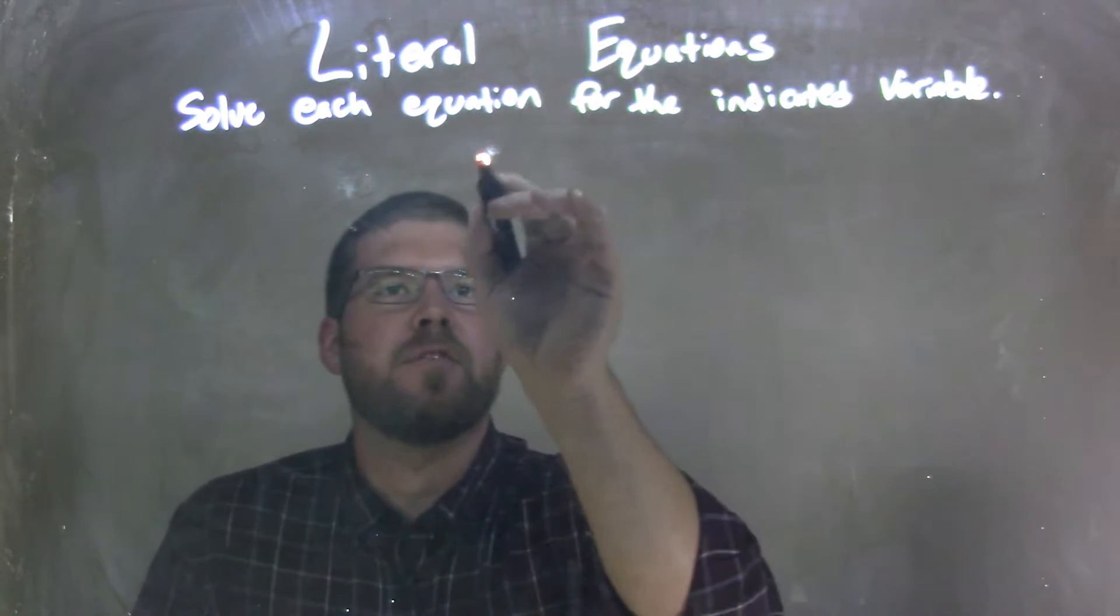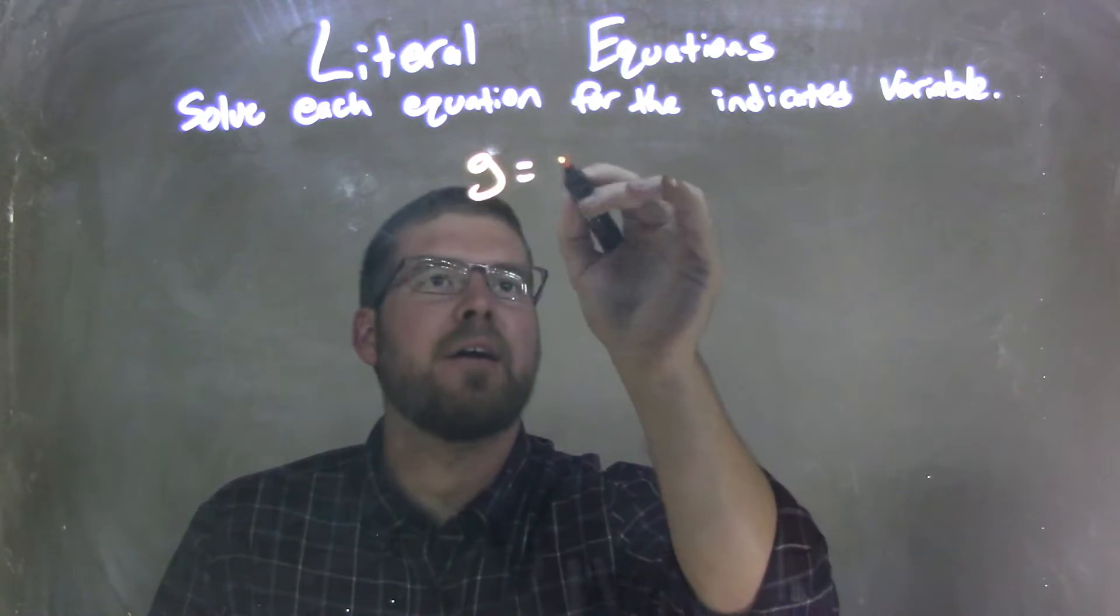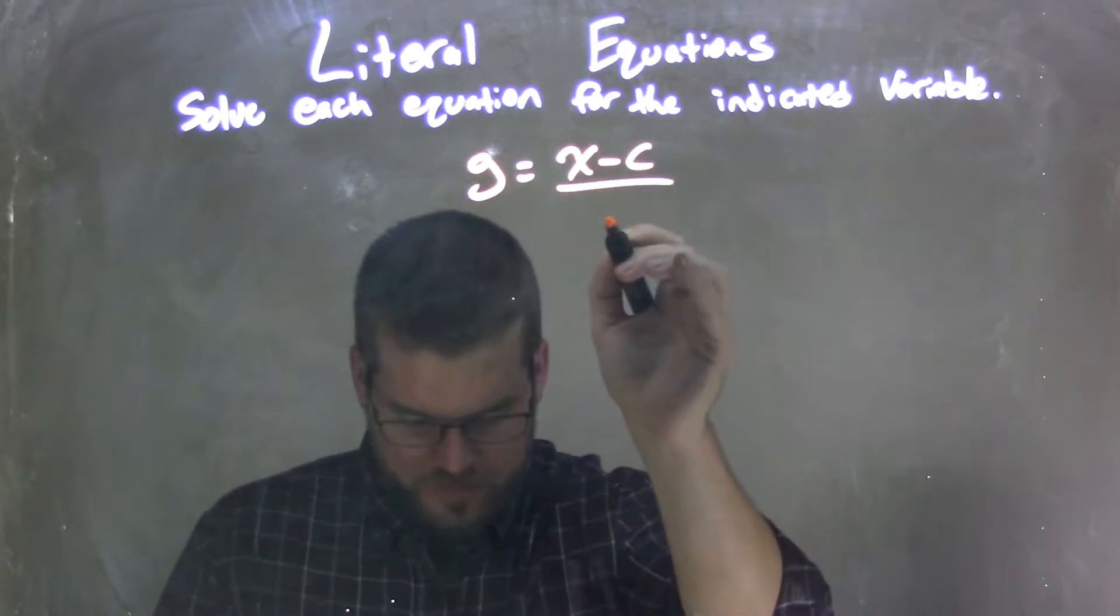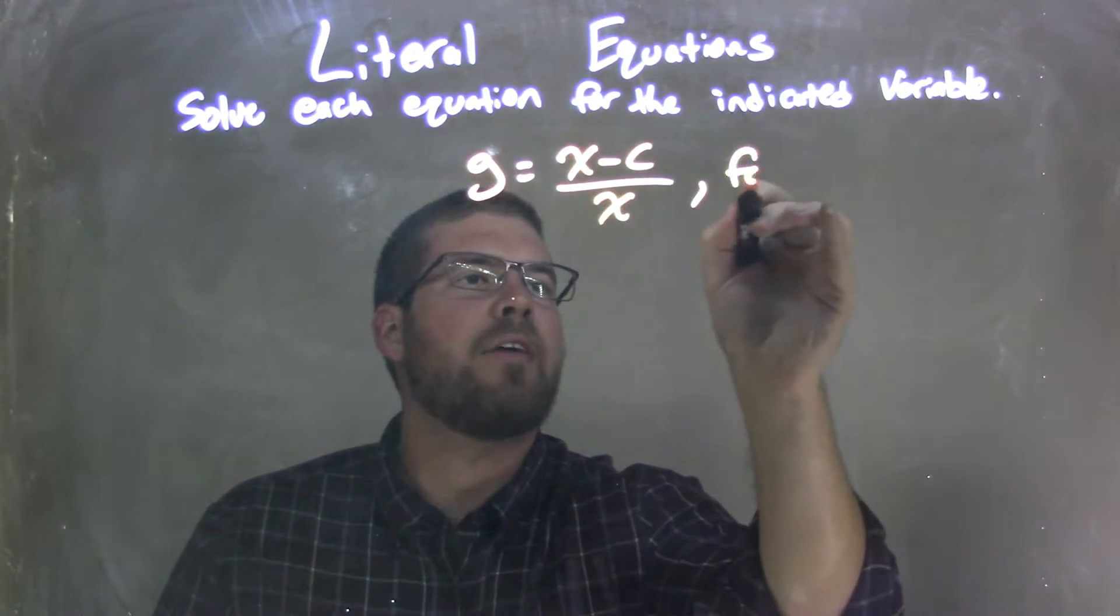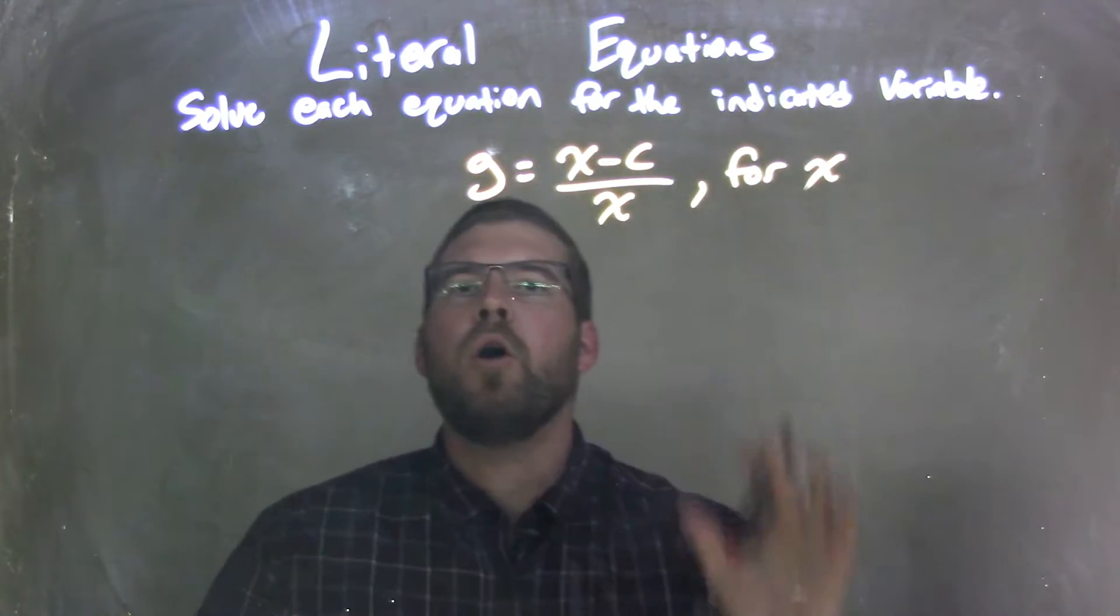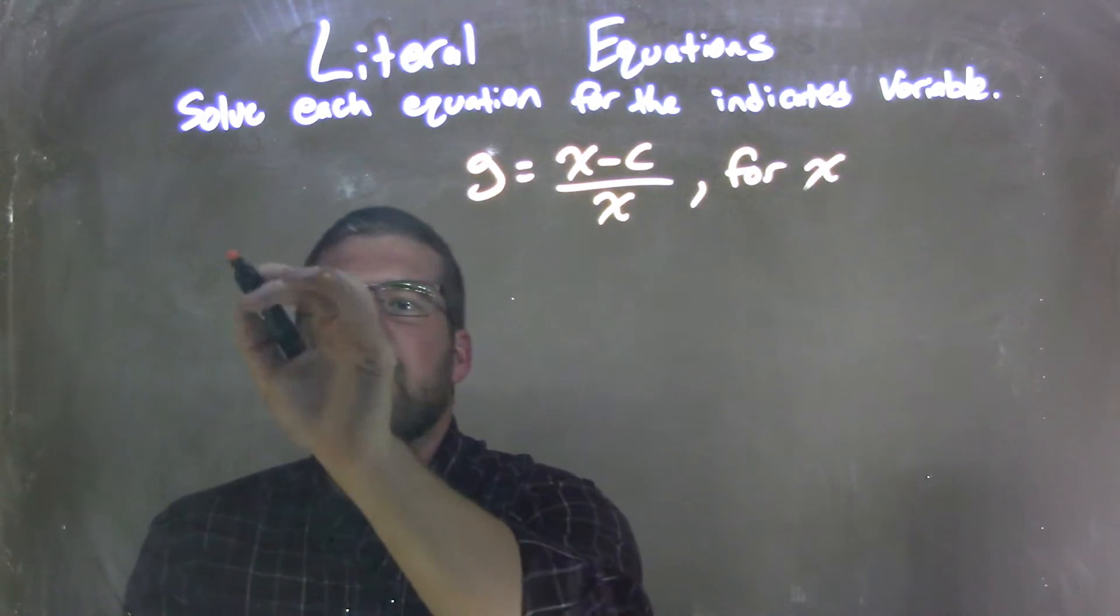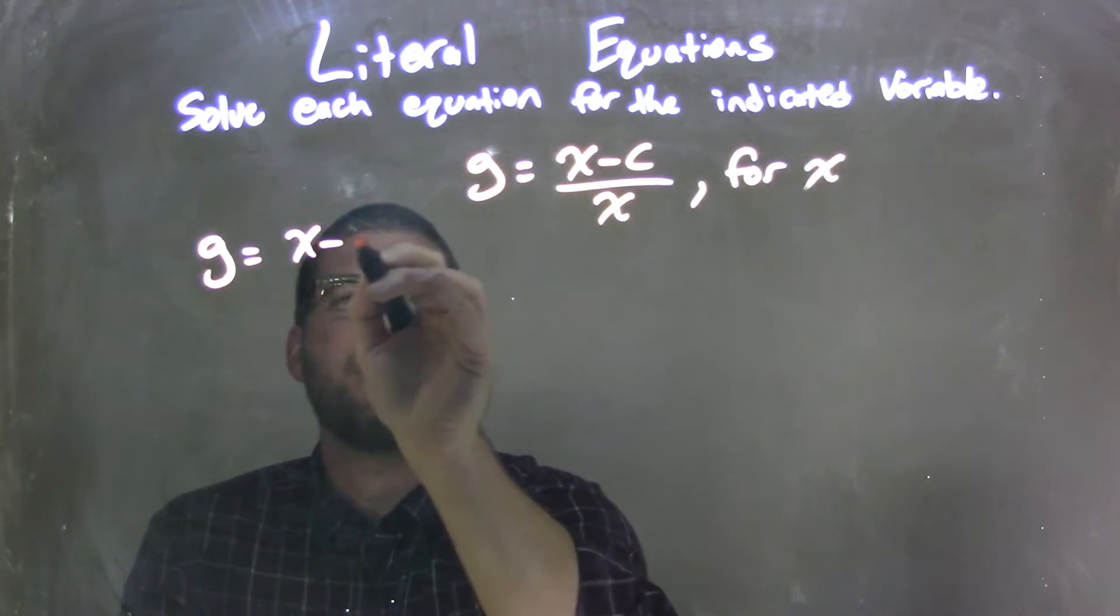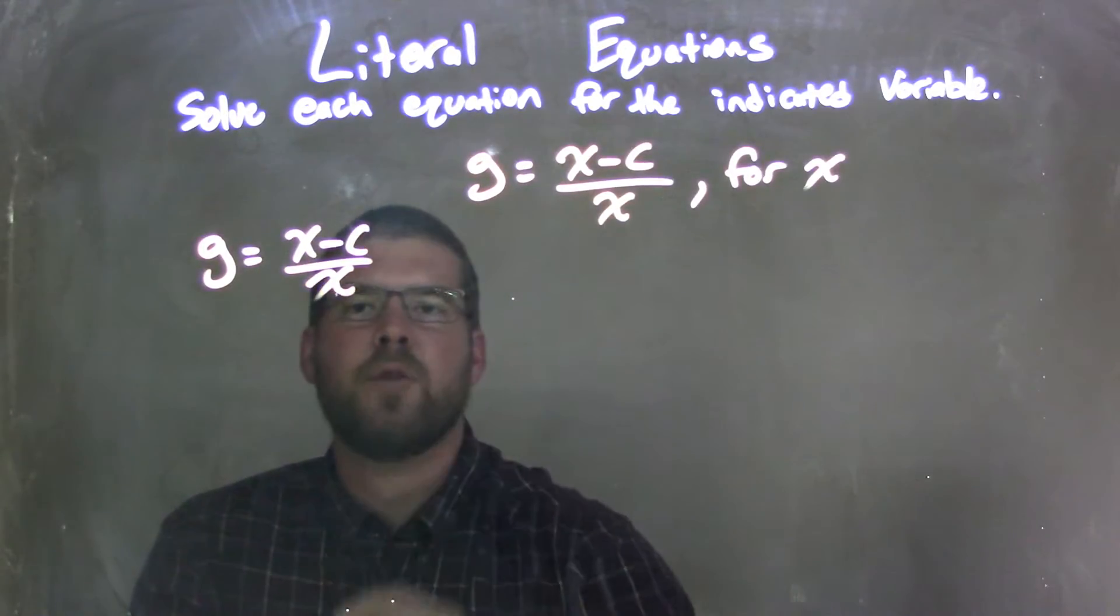If I was given this equation, g equals x minus c over x, we're going to solve that for x. I'm going to rewrite it over here. So g equals x minus c over x, and we're solving for x.